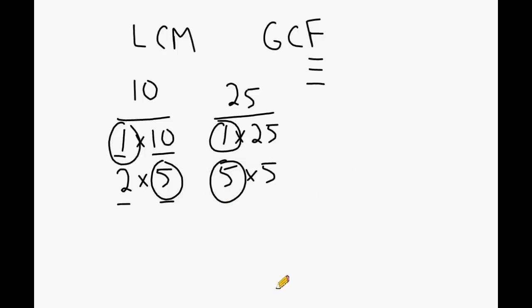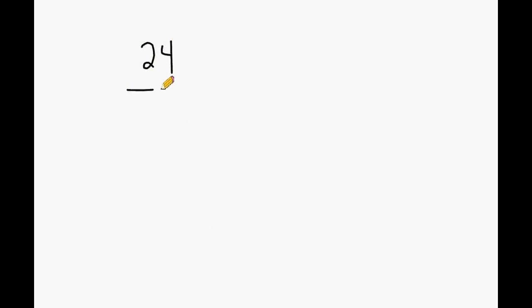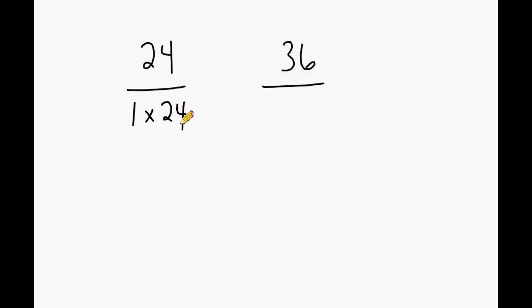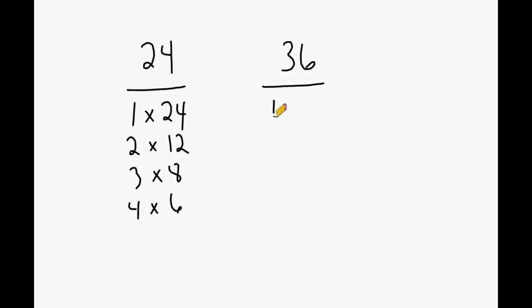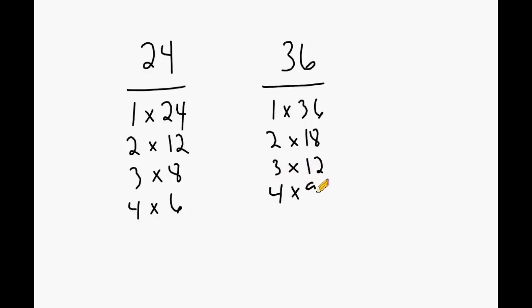Let's take a look at two more numbers: 24 and 36. Writing the factor pairs of 24: 1 and 24, 2 times 12, 3 times 8, and 4 times 6. For 36 we have 1 times 36, 2 times 18, 3 times 12, 4 times 9, and 6 times 6.